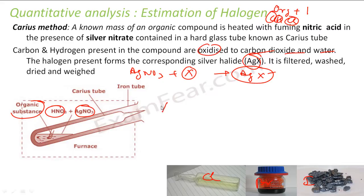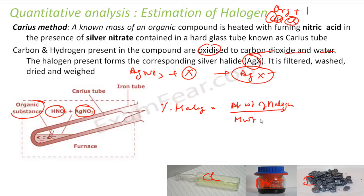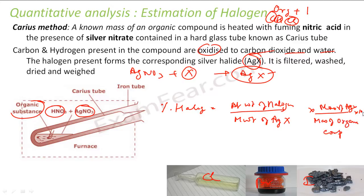So the percentage of halogen will be: atomic weight of halogen — because this will vary — divided by the molecular weight of AgX, multiplied by the mass of AgX which is formed, divided by mass of organic compound, into 100.